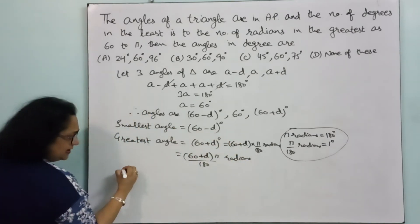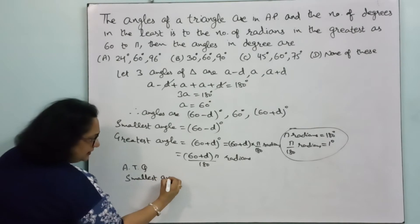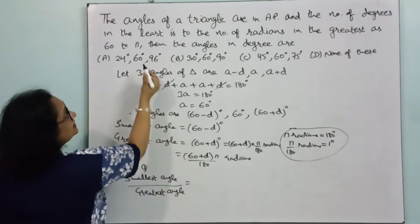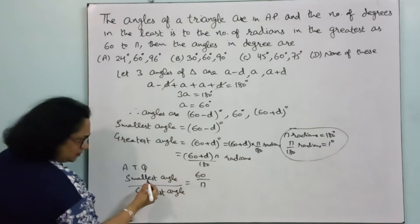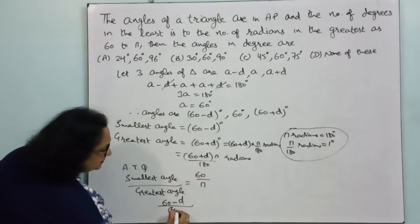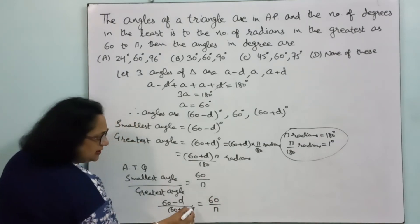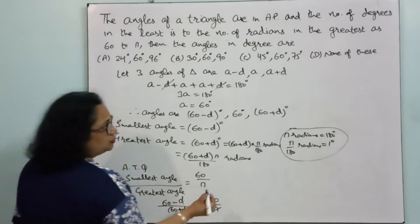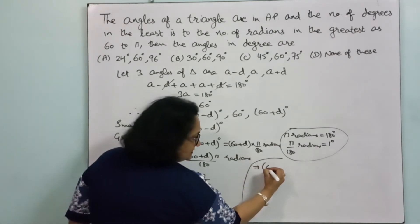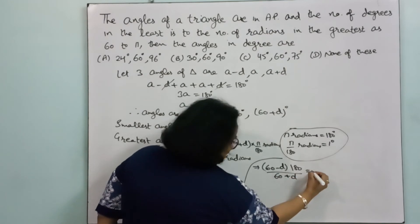Now according to the question, smallest angle upon greatest angle equals 60 upon pi. So we set up: (60 − d) divided by [(60 + d) × pi upon 180] equals 60 upon pi. The pi on both sides cancels, and 180 moves to the numerator, giving us (60 − d) × 180 upon (60 + d) = 60.